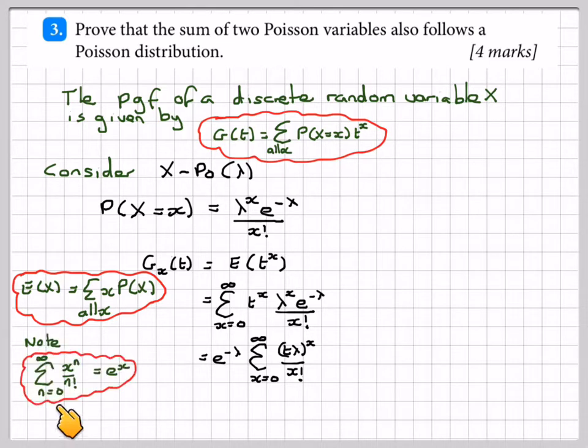Note, if you were to sum from n equals 0 to infinity of this series x to the n over n factorial, you'll get e to the x. So this will become e to the t lambda.